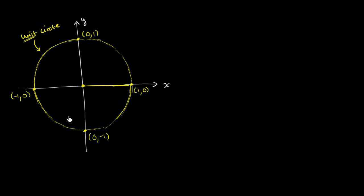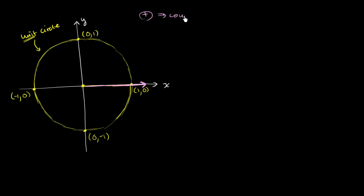Now with that out of the way, I'm going to draw an angle. And I'm going to define a convention for positive angles. A positive angle — the initial side of an angle, we're always going to place along the positive x-axis. That's the starting side of the angle. And then to draw a positive angle, the terminal side is going to move in a counterclockwise direction. So a positive angle means we're going counterclockwise.